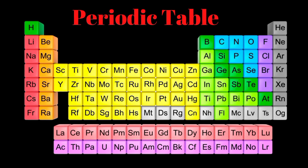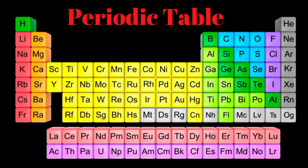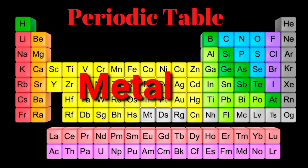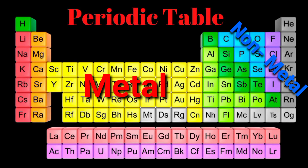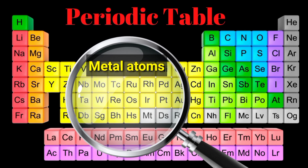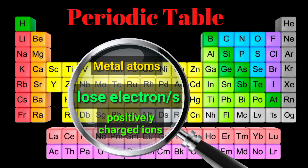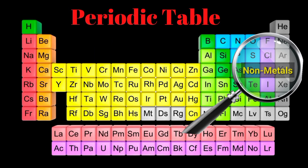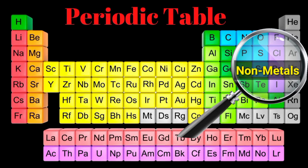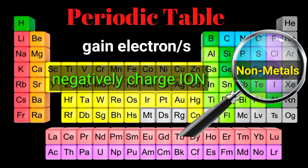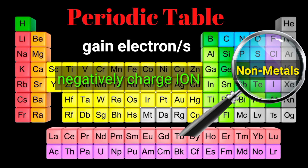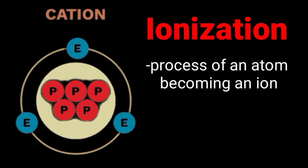How does an atom become an ion? Let's look at the periodic table of elements. Metal atoms and non-metal atoms go in opposite directions when they ionize. Metal atoms lose the electron or electrons in their highest energy level and become positively charged ions, while non-metal atoms gain an electron or electrons from another atom to become negatively charged ions. The process of an atom becoming an ion is called ionization.